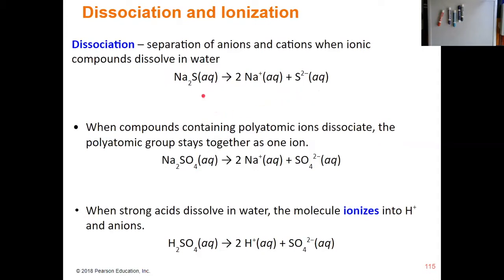Think about what happens with molarity. If I have one molar sodium sulfide — one mole per liter — that means I'm going to have two moles per liter of sodium ions, or two molar sodium ions. I'm going to have one mole per liter of sulfide ions, or one molar sulfide ions. Because the definition of molarity is moles divided by volume, and our volume isn't going to change. When the sodium sulfide separates, it's still going to separate into two moles of sodium ion and one mole of sulfide ion.